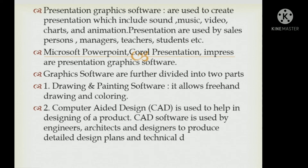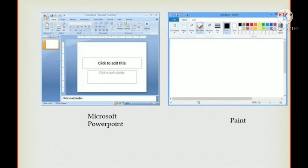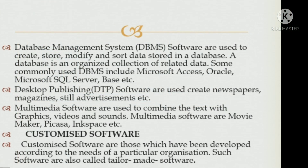Next is graphic software, divided into two parts: first, drawing and painting software, which allows freehand drawing and coloring; and second, computer-aided design, used to help in designing products. Database management system software are used to create, store, modify, and sort data in a stored database. DBMS examples include Microsoft Access, Oracle, and Microsoft SQL Server.